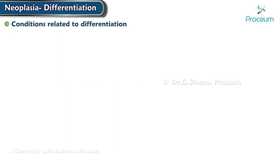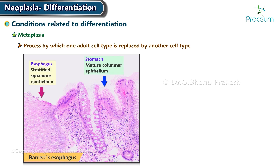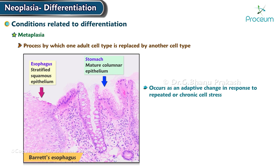Conditions related to differentiation. Metaplasia is the process by which one adult cell type is replaced by another cell type, and it often occurs as an adaptive change in response to repeated or chronic cell stress.